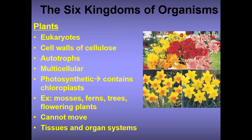Plants are eukaryotes with cell walls of cellulose. They are autotrophs, meaning they make their own food. They are multicellular and photosynthetic — they carry out photosynthesis and contain chloroplasts. Examples include mosses, ferns, trees, and flowering plants. They cannot move and they have tissues and organ systems.